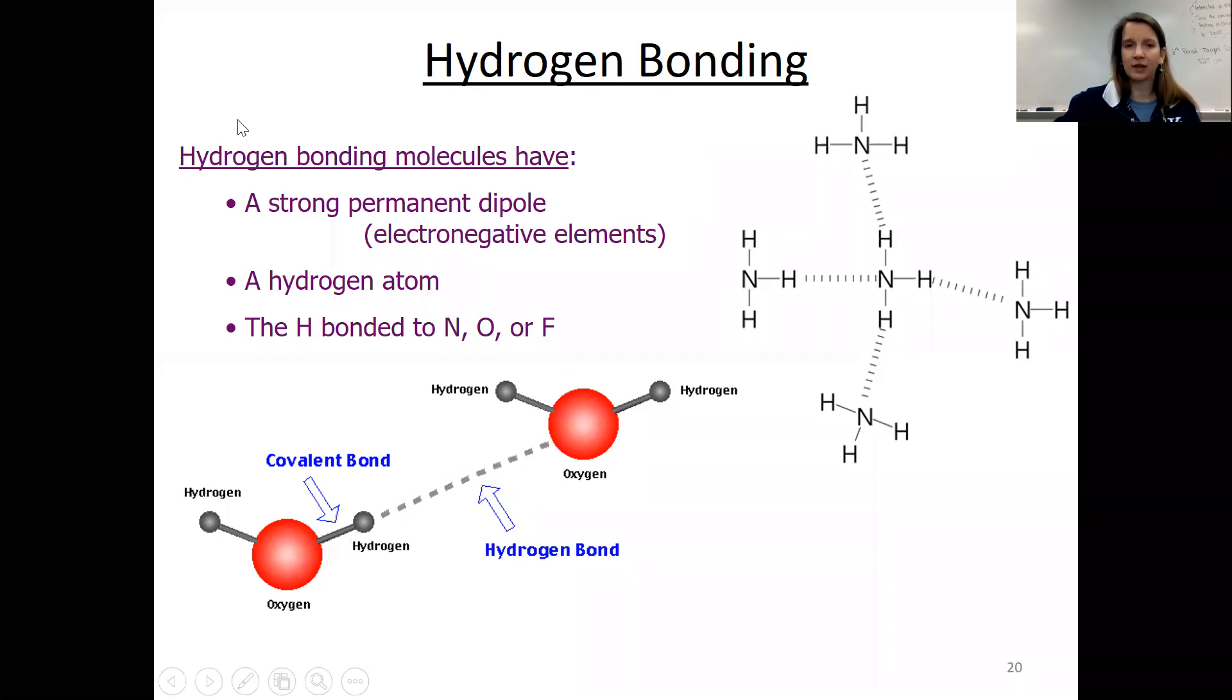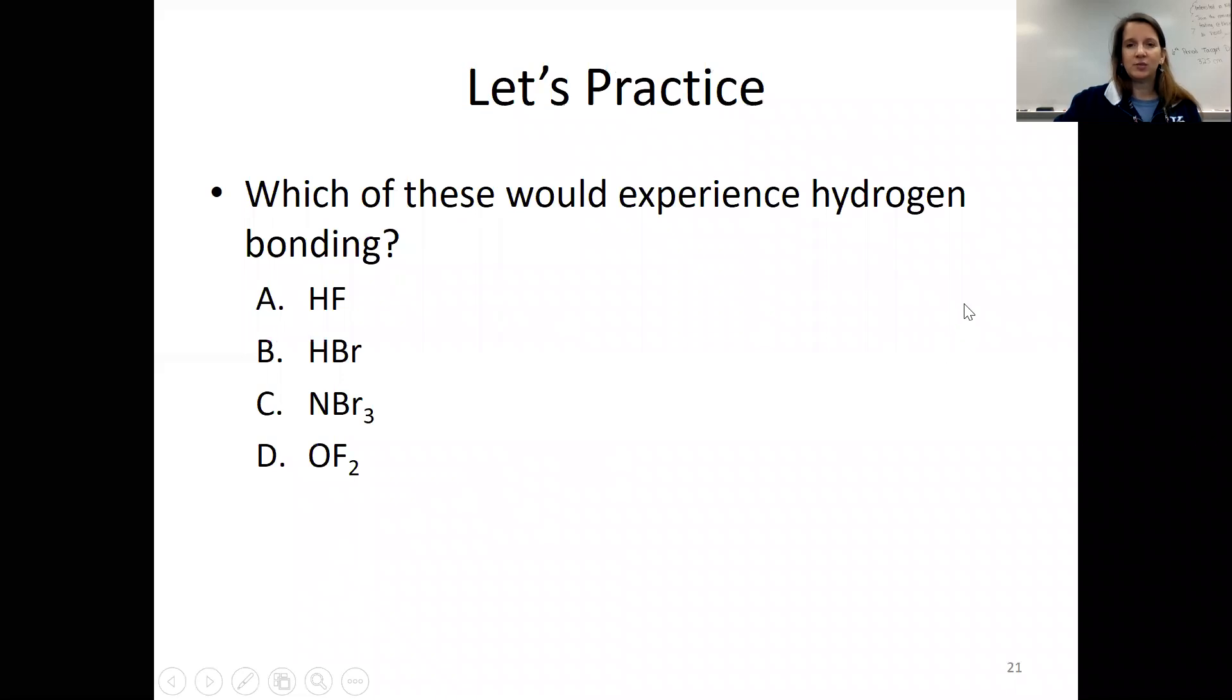Let's take a look. So which of these would experience hydrogen bonding? So again, we're looking for hydrogen bonded to nitrogen, oxygen, or fluorine. And so you can see that that's only going to exist in one of these cases. So hydrogen bonding would only exist here in letter A.